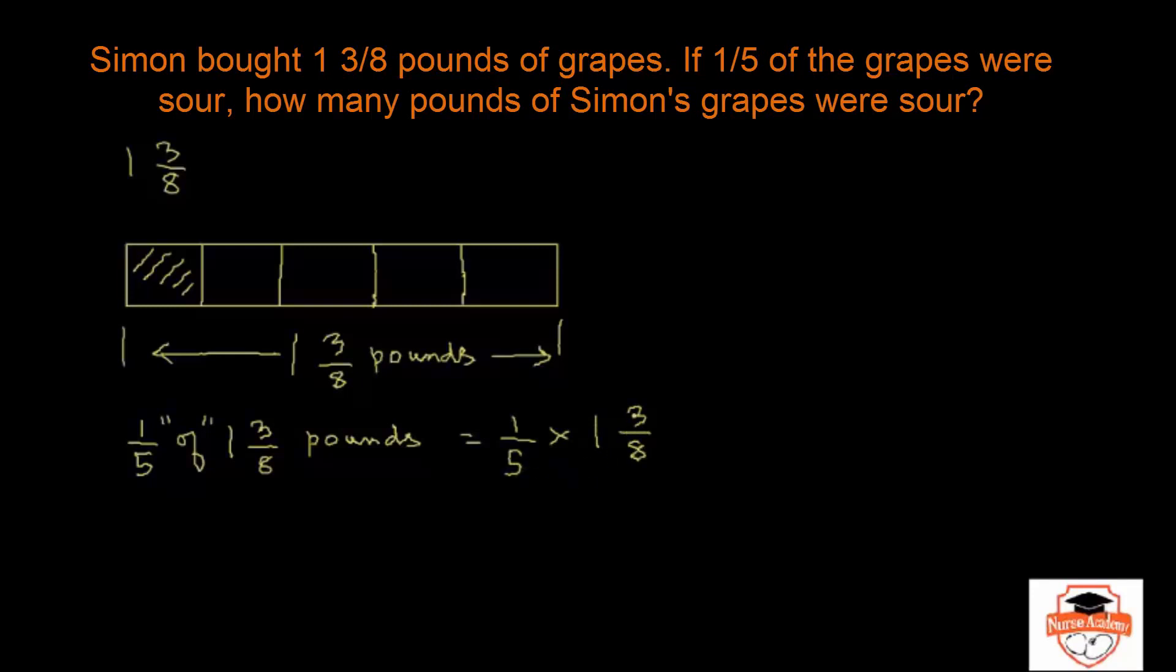To do this multiplication, you need to turn this mixed number to an improper fraction. So this becomes equal to 1/5 times 8 times 1 is 8 plus 3 is 11 over 8.